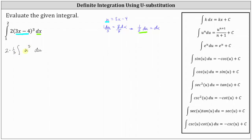At this point we need to make a choice. We can find the antiderivative with respect to x and then use the limits of integration from 1 to 2. Or, if we want to leave this in terms of u, we will need to determine the new limits of integration for u. The antiderivative is two-thirds times u to the fourth divided by 4 plus c. We leave off the plus c for definite integrals, which means in terms of x the antiderivative would be two-thirds times the quantity 3x minus 4 to the fourth divided by 4, and we would use the original limits of integration from 1 to 2.